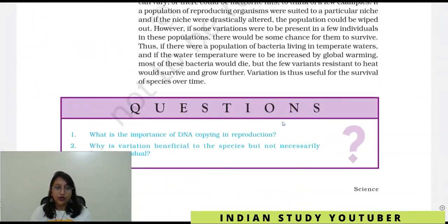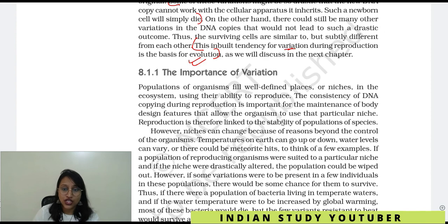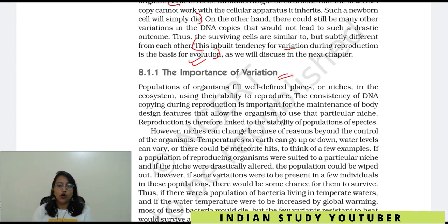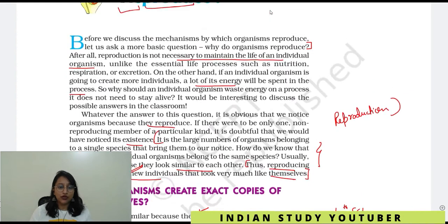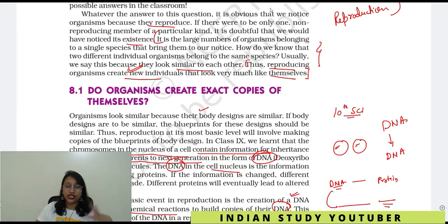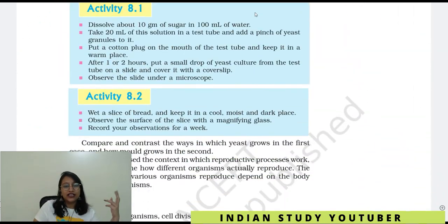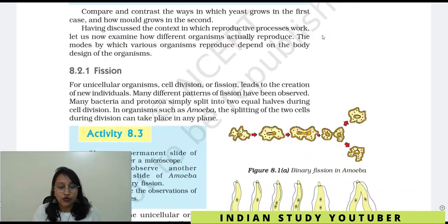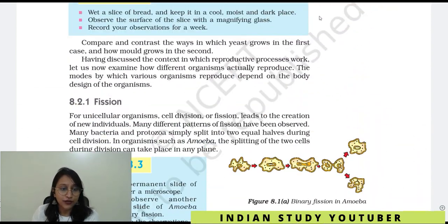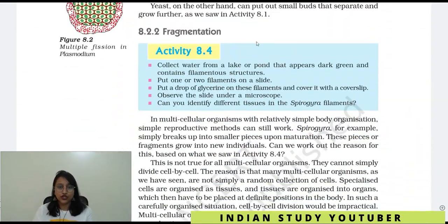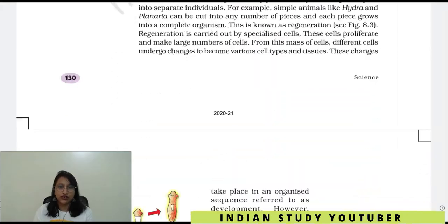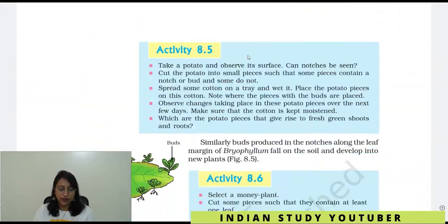In the next video we are going to study the importance of variation. We will cover it properly. Before that, we have read that organisms are not exact copies — there is some variation, exact copies are not made. Then we will discuss the difference between sexual and asexual reproduction, and in other parts we will cover fission, fragmentation, and regeneration.